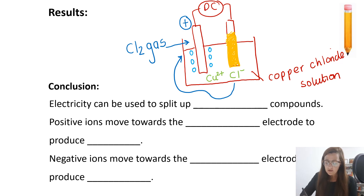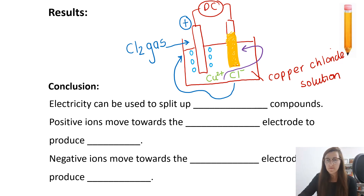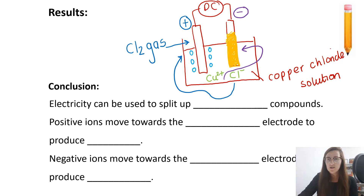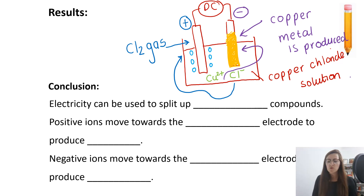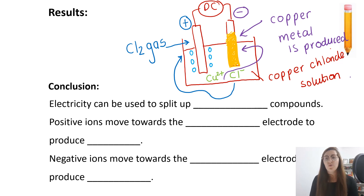At the negative electrode, a coppery substance is produced, coated around the electrode. That is because the negative electrode attracts the positively charged copper ions, which move towards it, and copper metal is produced. So at the positive electrode, chlorine gas is produced; at the negative electrode, copper metal is produced. Opposites are attracting — negative ions move towards the positive electrode, and positive ions move towards the negative electrode.